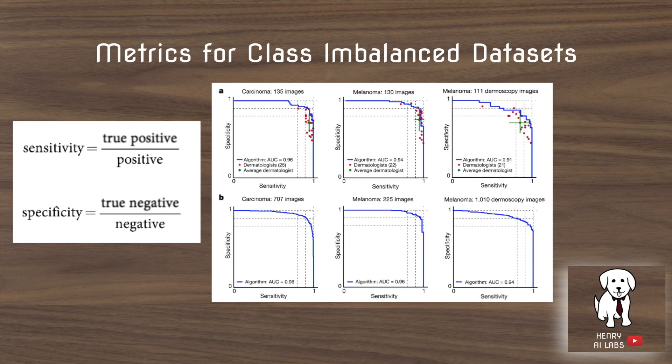When dealing with class-imbalanced datasets — for example there might be around 130 melanoma images versus 270 benign images, a distribution skewed toward one class — you need metrics that account for imbalance. Sensitivity is the true positive rate divided by the positives. Specificity is the true negatives divided by the negatives. The AUC, or area under the curve, shows the trade-off between the two as you change the decision boundary. You can slide the decision threshold up or down to optimize for sensitivity or specificity.